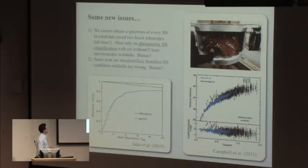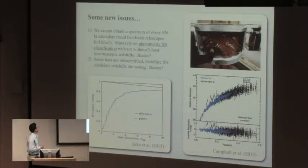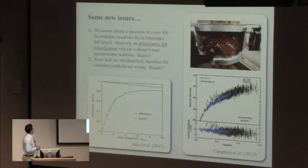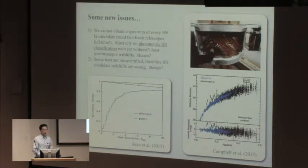This is a paper by Heather Campbell from a couple years ago. The blue points show the spectroscopically confirmed type 1a supernovae on this Hubble diagram. The black points are points where we didn't get a spectrum of the supernovae, but the light curves look like 1As, and we got spectroscopic redshifts of the host galaxies after the fact. It seems to work reasonably well.